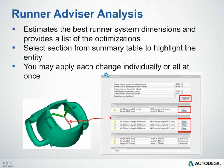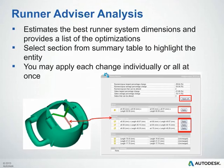When you run a runner advisor analysis, it will estimate the best runner system dimensions and will provide a list of optimizations in a summary table. From here, you can select a section from the summary table to highlight the entity — if you select it on the left, you can see that entity highlights in pink on the model. You may also apply each change individually or all at once by clicking the Apply button on the right.